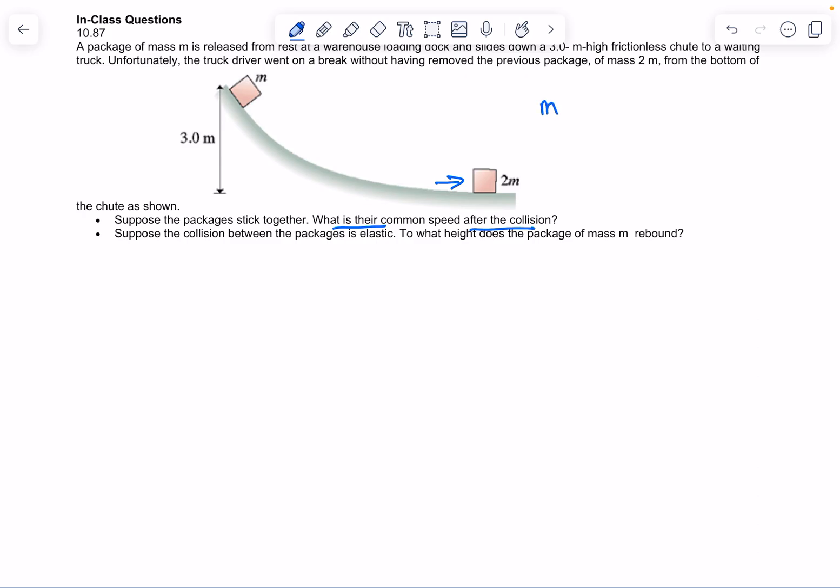And so you can just do mgh equals 1 half mv squared, and so the masses won't matter. And then you can solve for the velocity, but that's going to be the velocity of box 1 right before the collision.